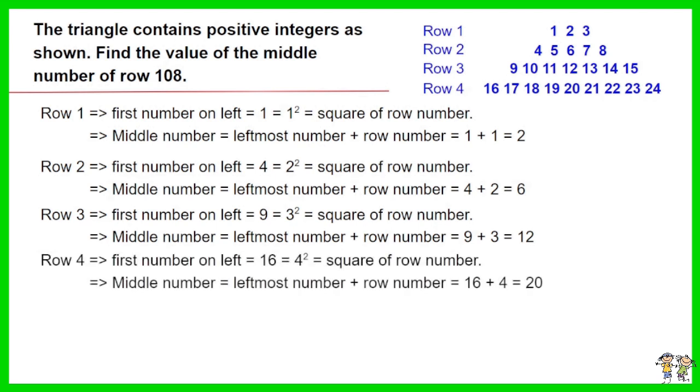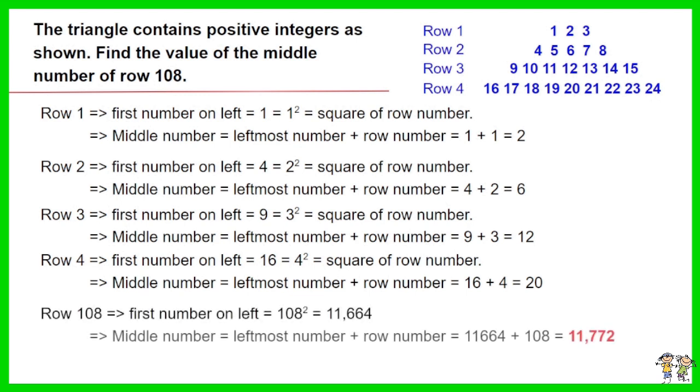As such, the leftmost number of row 108 equals 108 square equals 11664. The middle number of row 108 equals leftmost number plus row number equals 11664 plus 108. The answer is 11772.